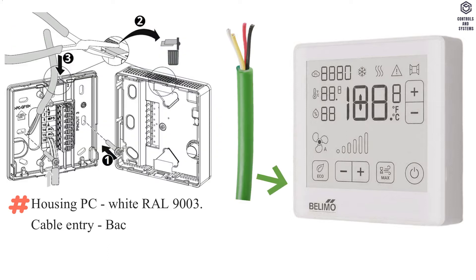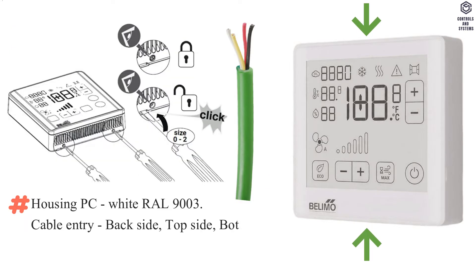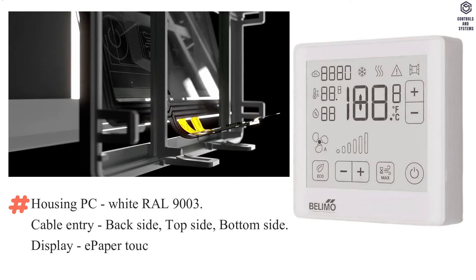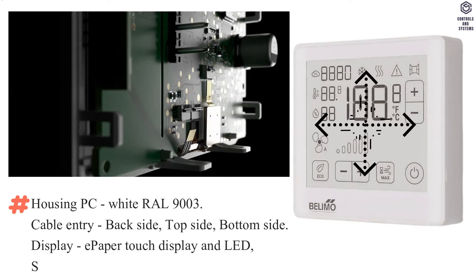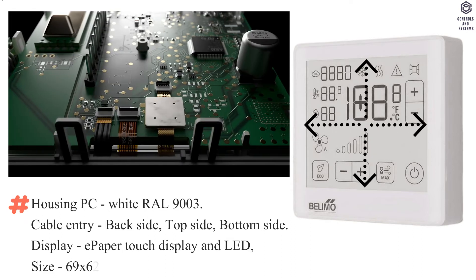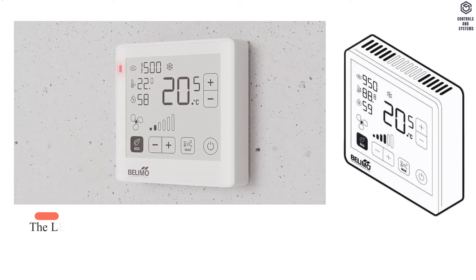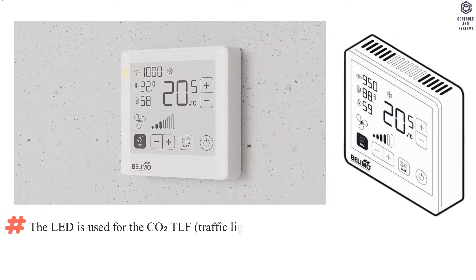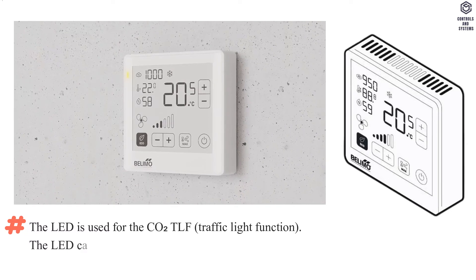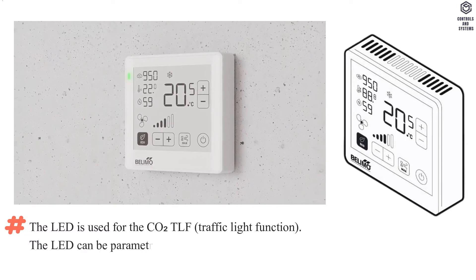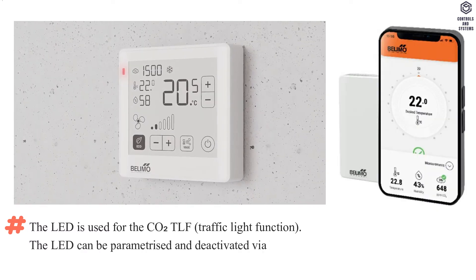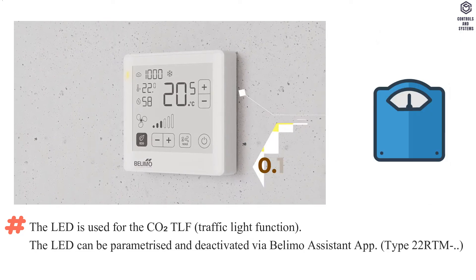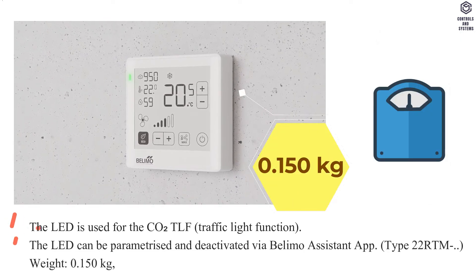Cable entry is back side, top side, and bottom side. Display is e-paper touch display and LED. Size is 69 by 62 millimeters. The LED is used for the CO2 TLF — traffic light function. The LED can be parameterized and deactivated via the Belimo Assistant App. Weight is 0.150 kilograms.